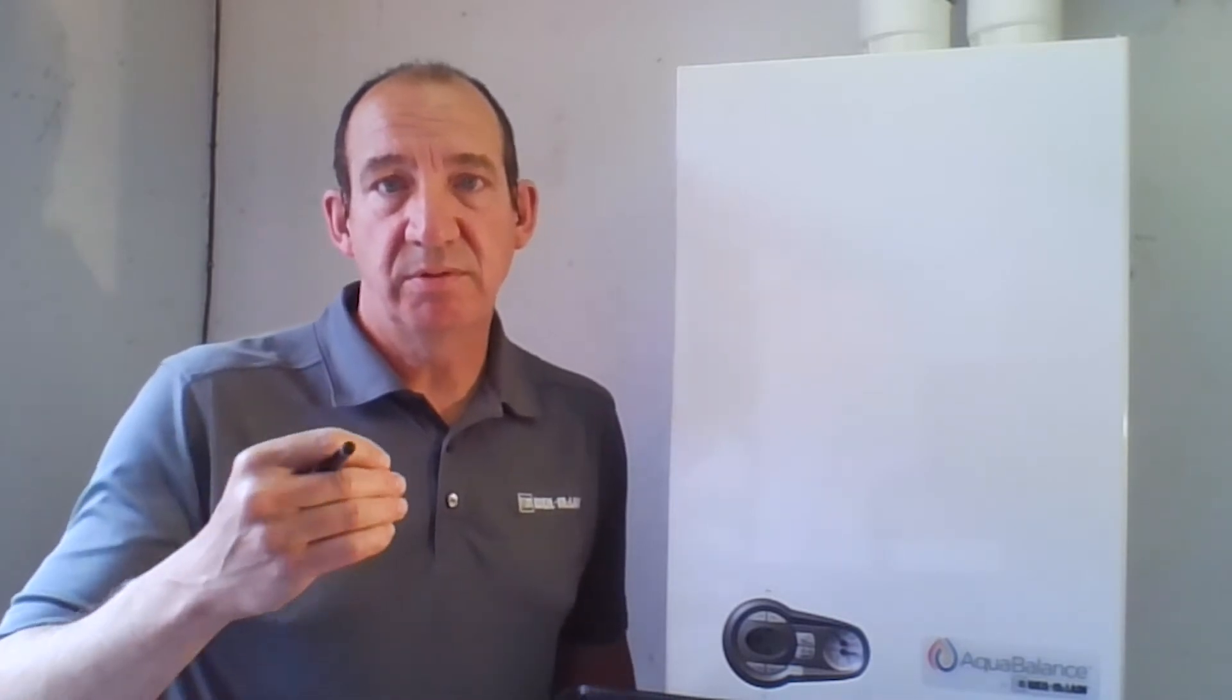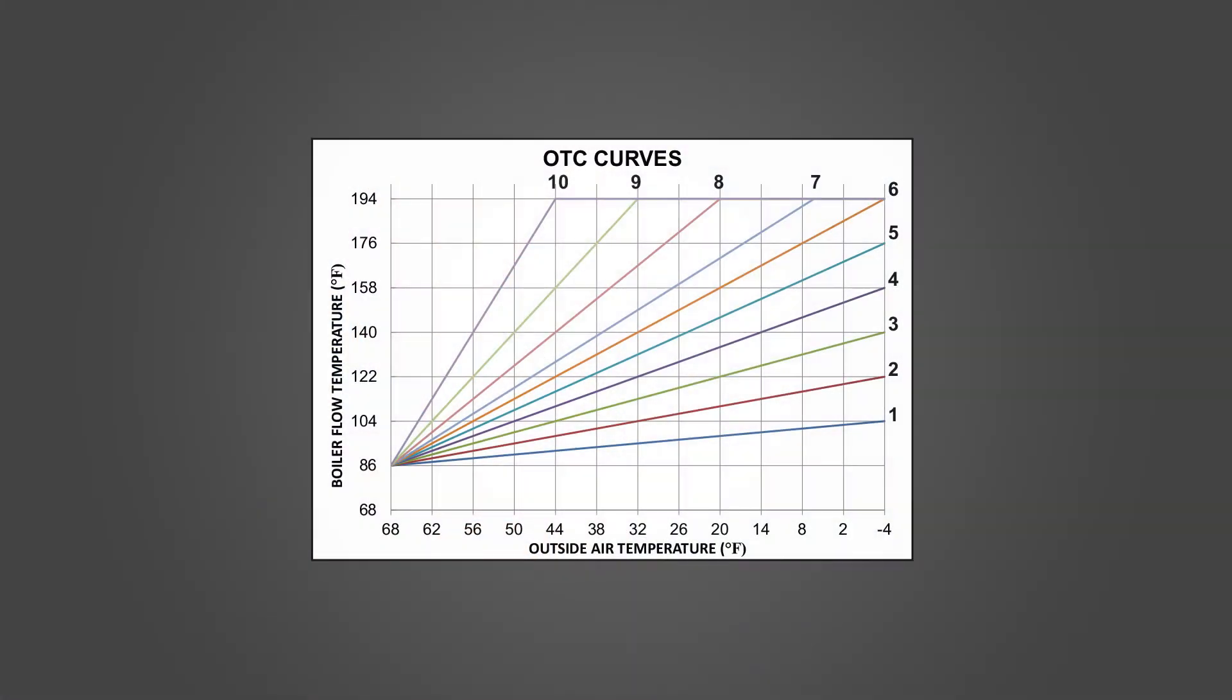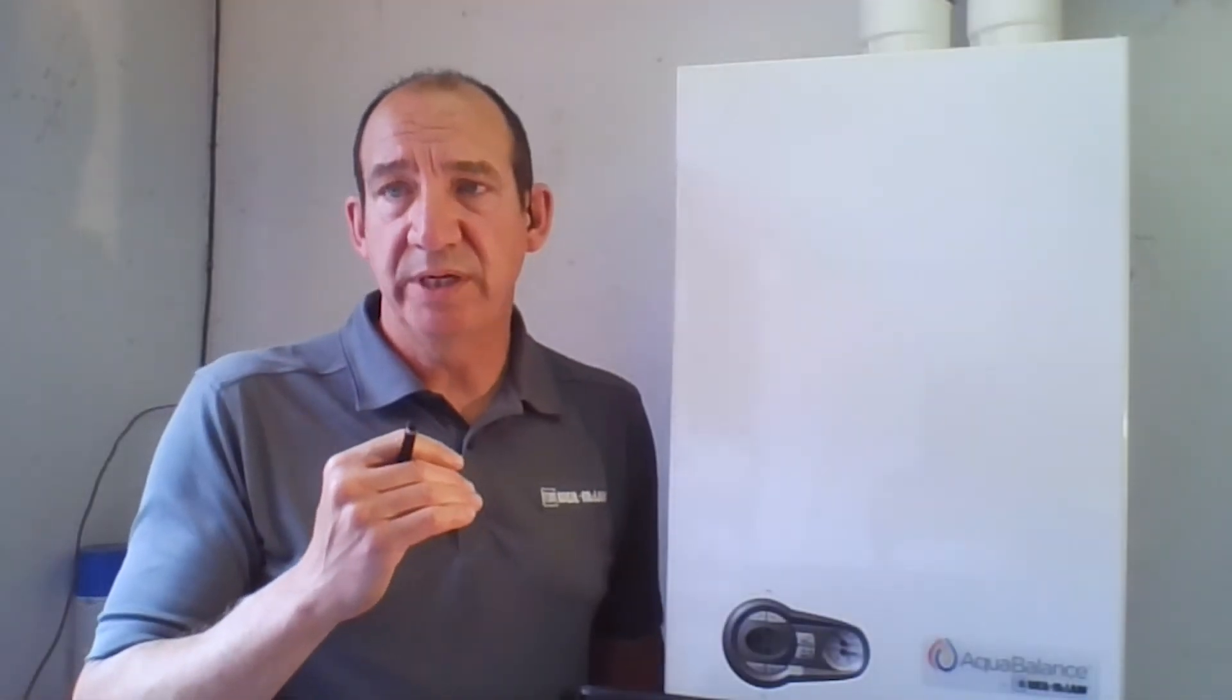But what happens in September, October, or March, April, May, when we don't have quite such cold temperature, the load is not so high in the house. So the demand is lower and the outdoor temperature sensor reports that back to the boiler. And then what it does is it reduces that 180 to something less. You can find those curves in the booklet. I believe that would be on page 67 of your booklet on page 66. It talks about how to exempt, but I'm going to show you the real quick, easy way to exempt this boiler.